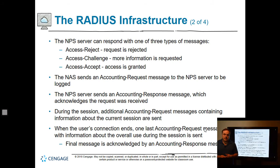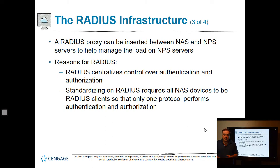Network policy server, which is part of Windows, can respond with one of three types of messages when your client tries to connect: access reject, access challenge, or access accept, which would allow the traffic to pass. The NAS sends an accounting request message to the network policy server to be logged. The server sends an accounting response message acknowledging receipt, and then if everything is good, traffic starts going. The RADIUS proxy can be inserted between the NAS and the NPS servers to help manage the load on the NPS servers.